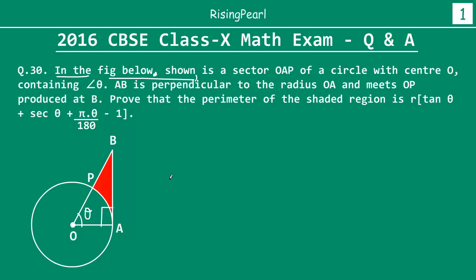AB is perpendicular to OA and meets OP when we produce it at B. So when we extend OP in a straight line, it intersects this perpendicular line at point B. We have to prove that the perimeter of the shaded region is R times (tan θ + sec θ + πθ/180 − 1), where R is the radius of the circle.